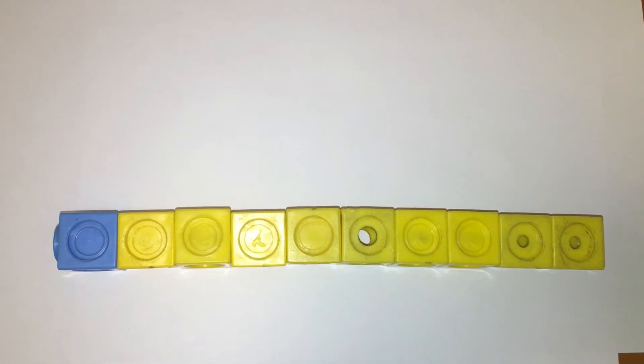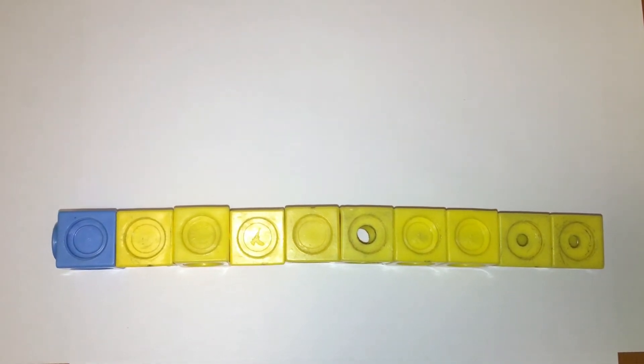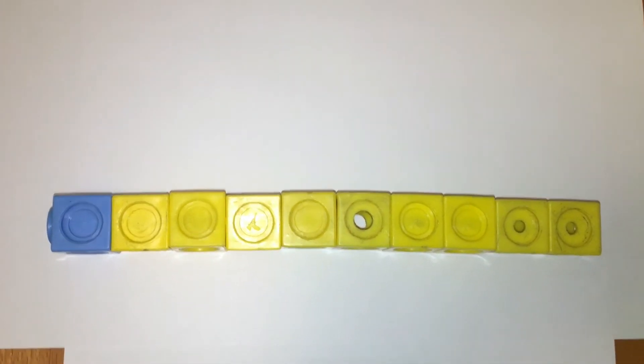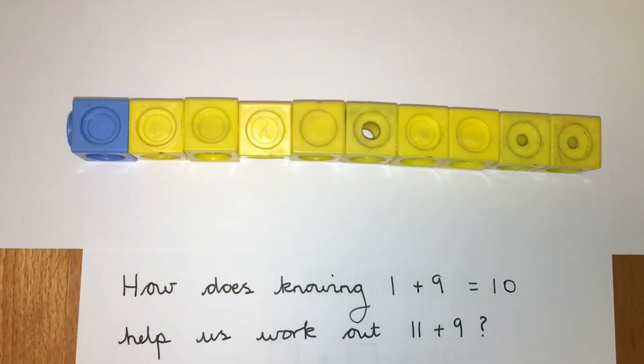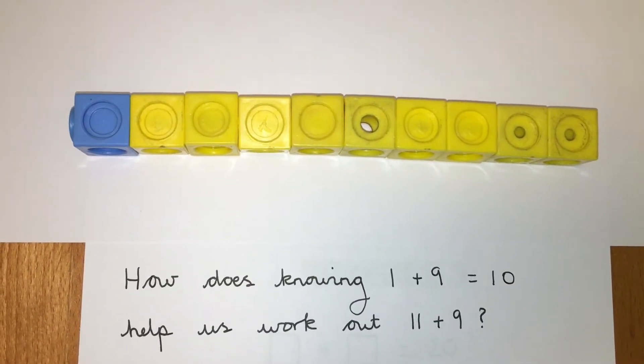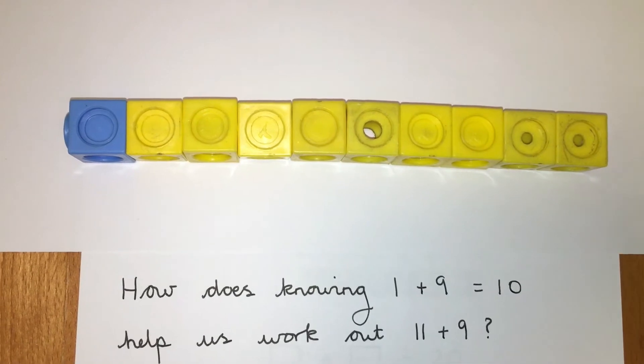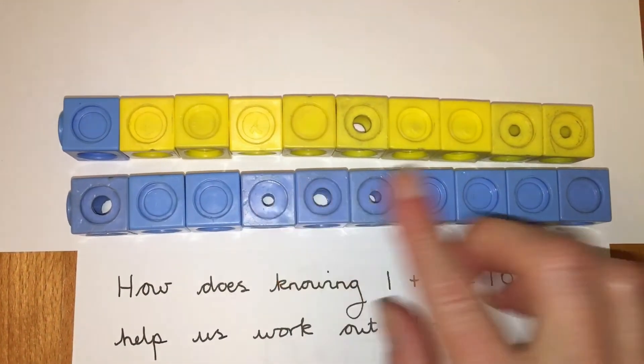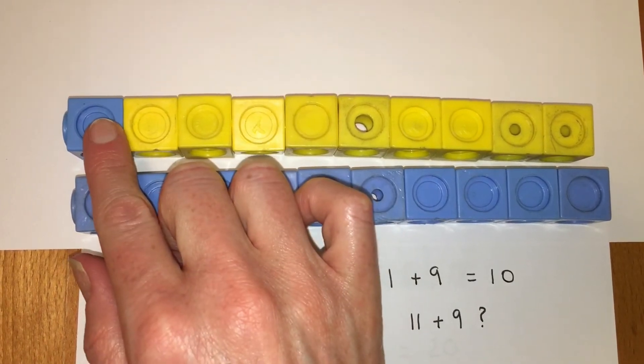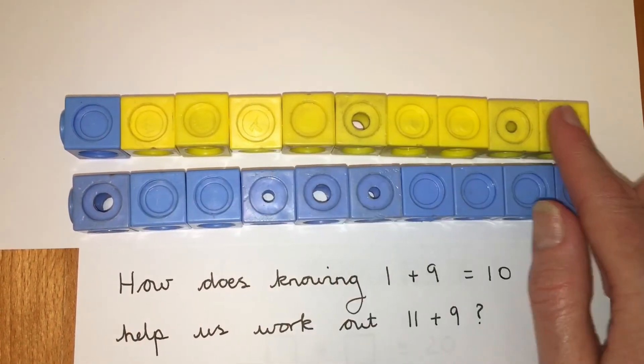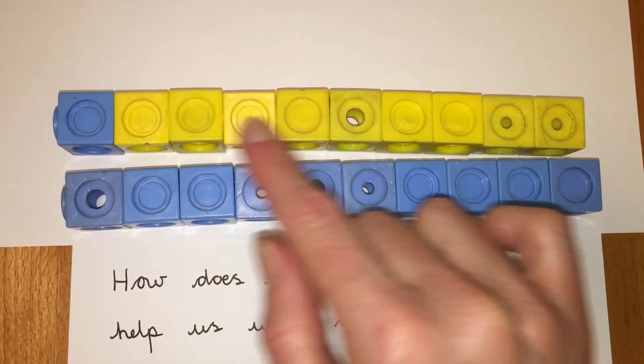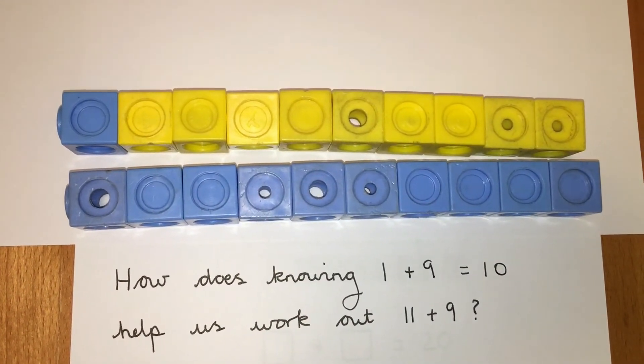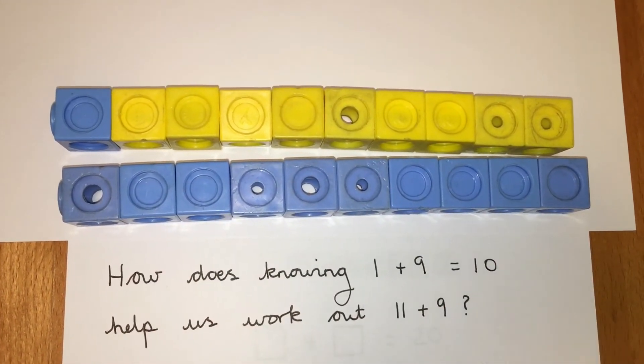We've got the number bond here. 1 plus 9 equals 10. How does that help us to work out 11 plus 9? Well, we know that 11 is made up of 10 and 1 more. So if we know that 1 plus 9 equals 10, then we know that 11 plus 9 must equal 20 because it's just 10 more.